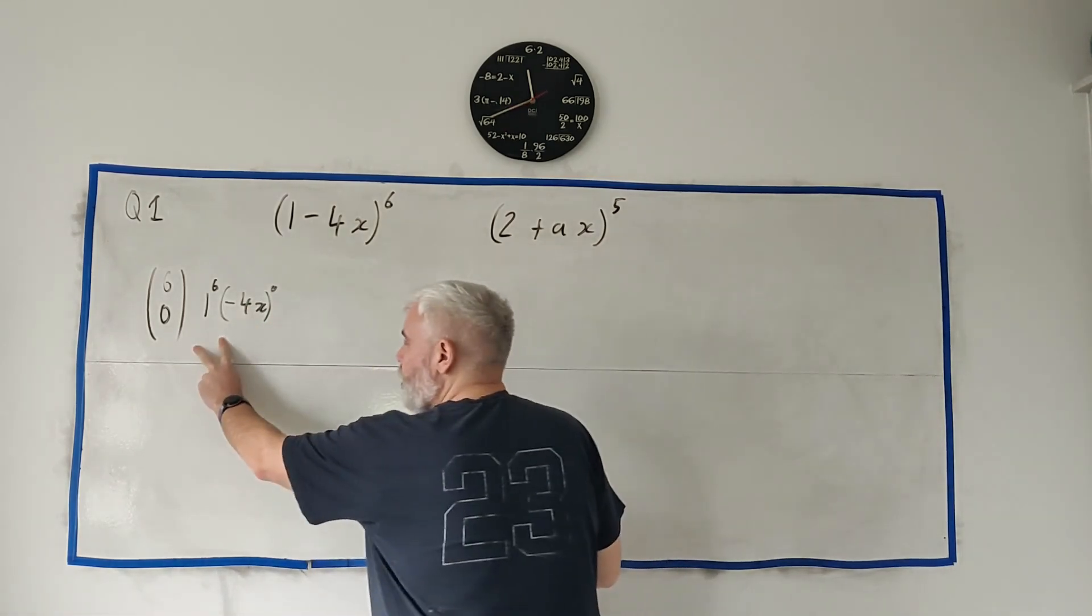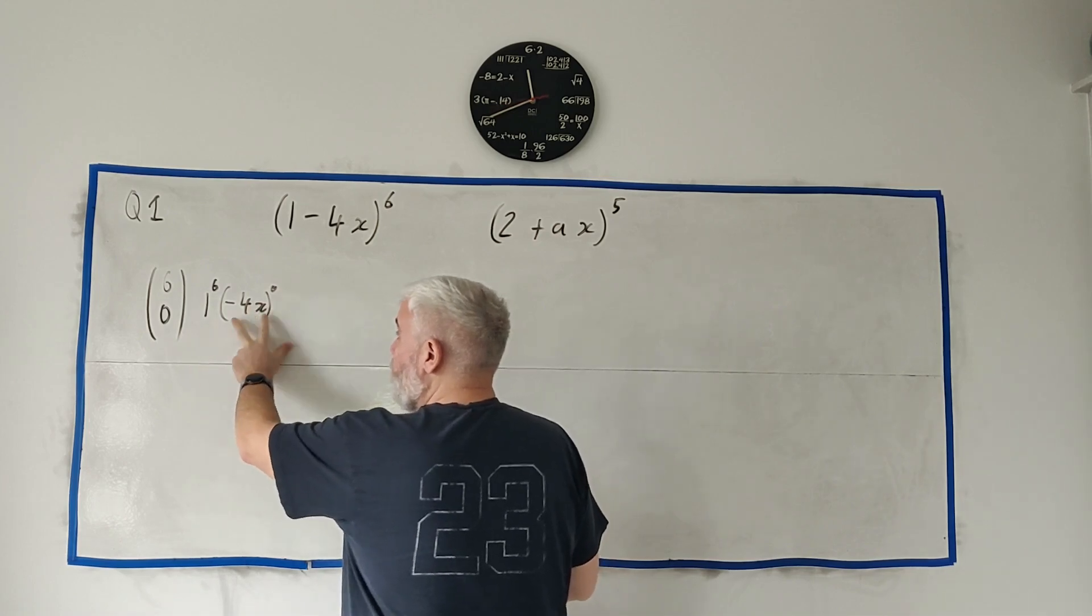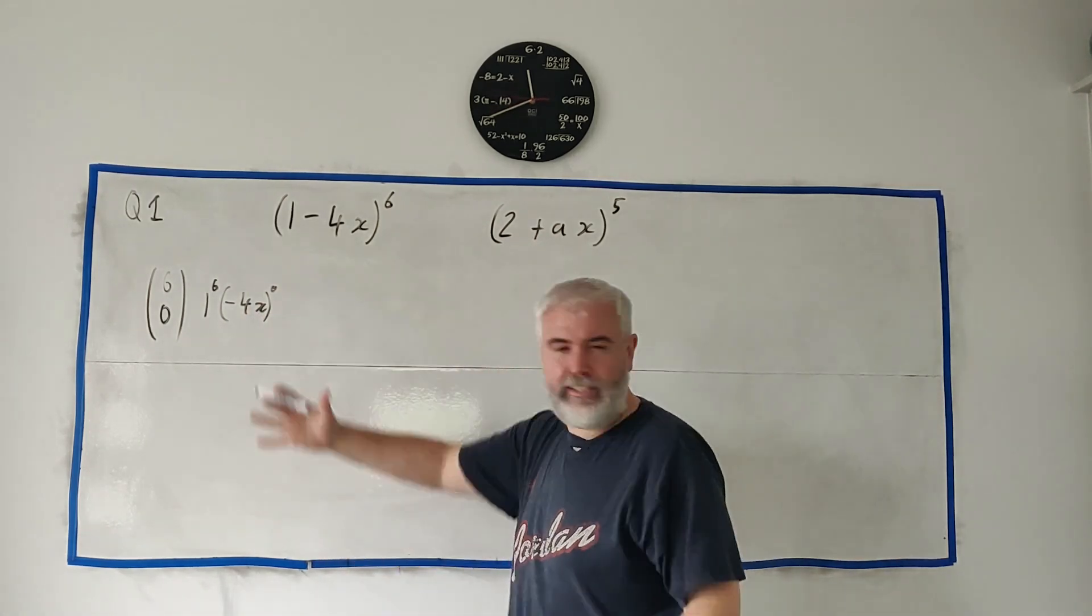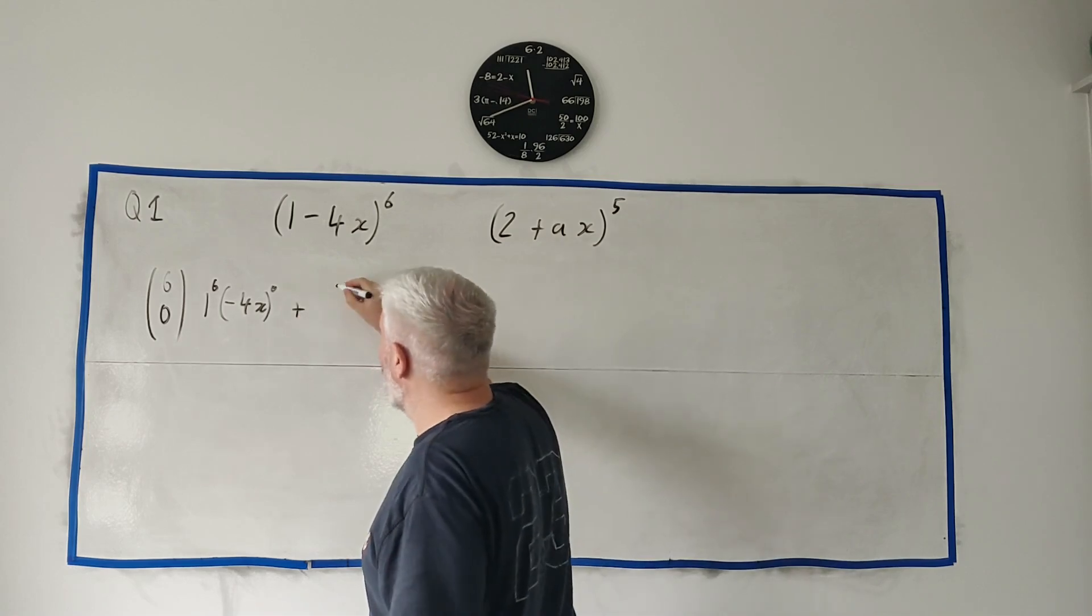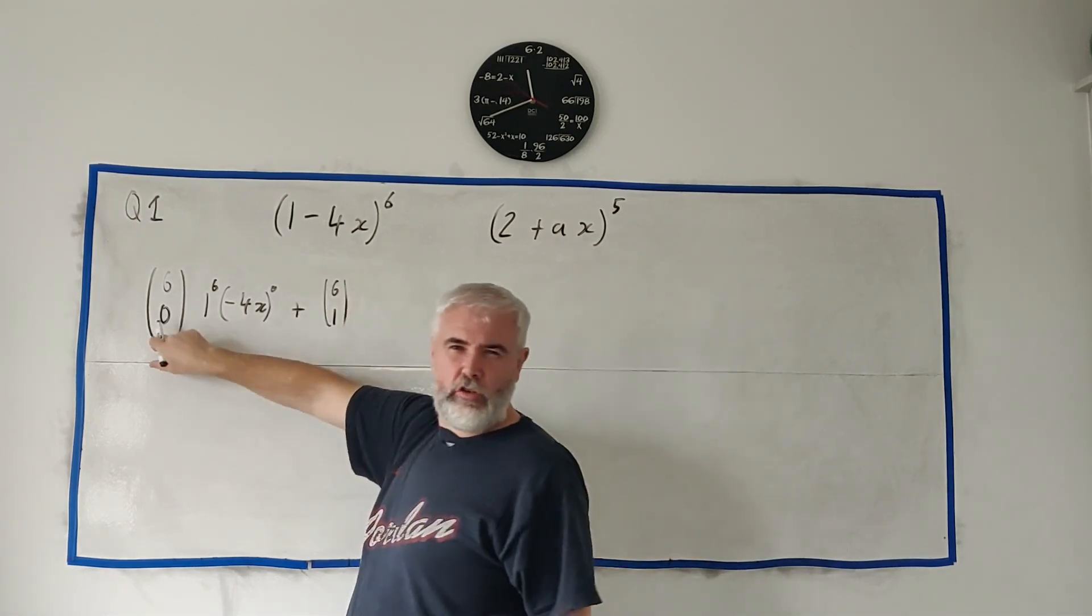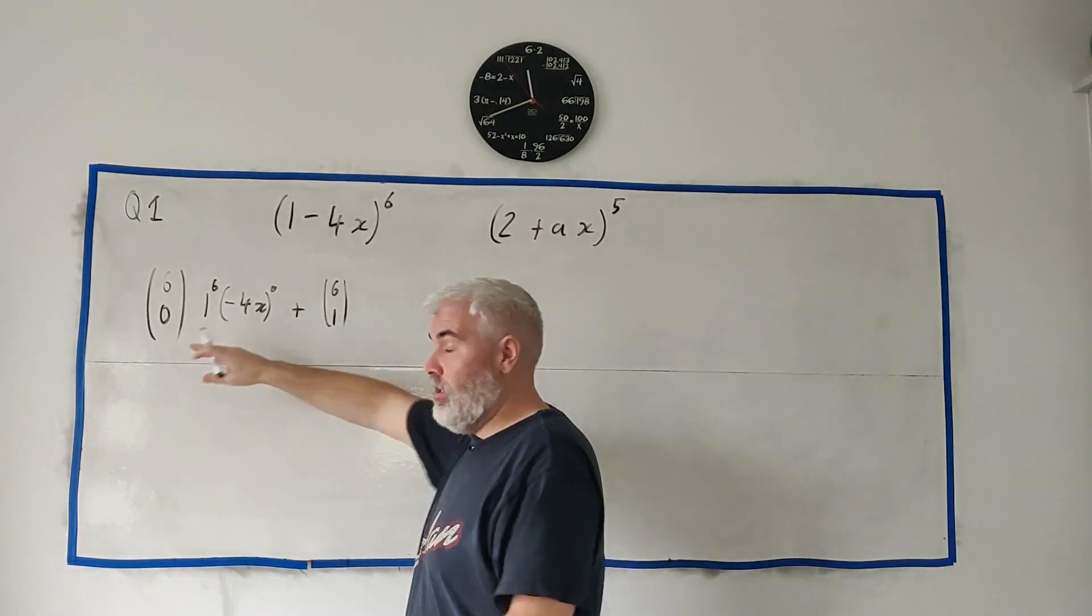So that'd be the zeroth term of this and that would leave this would turn into a 1. So we'd have no x in that. The next one would be 6 choose 1. 6 choose 0 by the way is 0, sorry it is 1.